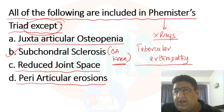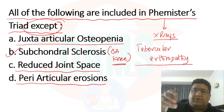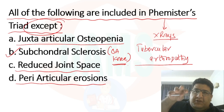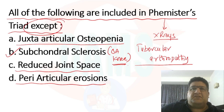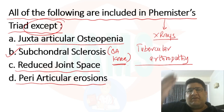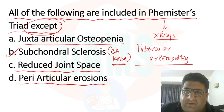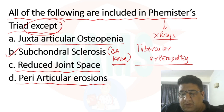Subchondral sclerosis belongs to osteoarthritis of the knee. I would suggest you go to my YouTube channel where I've covered two important videos: one covering all first X-ray signs of various conditions — especially useful for those in the revision phase — and another explaining how X-ray signs of osteoarthritis of the knee evolve over time with aging. I hope this video helps you understand this important topic. Thank you.